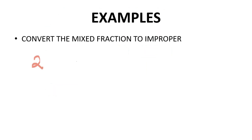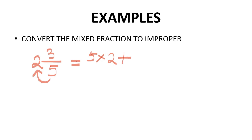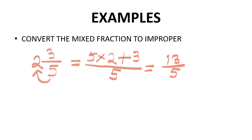Let us take one example: 2 whole 3 upon 5. We multiply 5 by 2, which gives 10, then add the numerator 3, giving 13 upon 5 — with the denominator remaining the same 5. That equals 13 upon 5. This is converting a mixed fraction into an improper fraction.